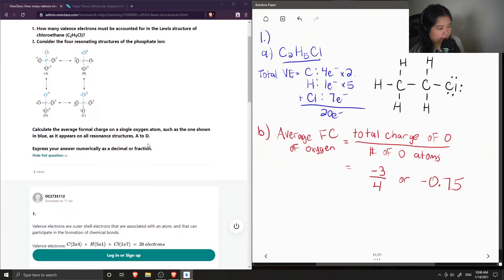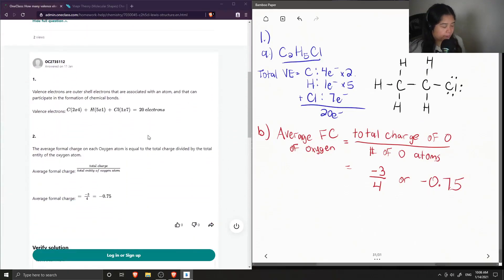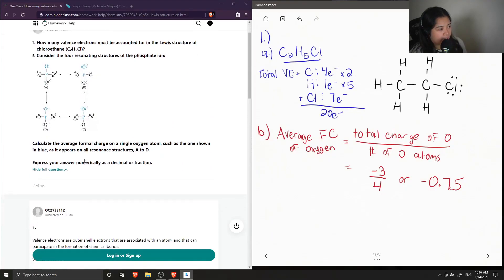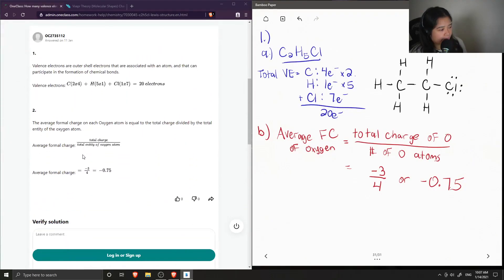Okay, so now let's see what the answer key said. For the first part, valence electrons are outer shell electrons that are associated with an atom and that can participate in the formation of chemical bonds. So they have 20 valence electrons for chloroethane.